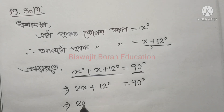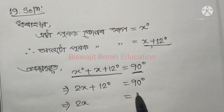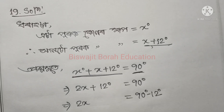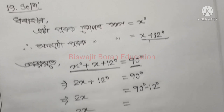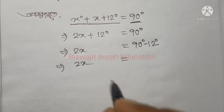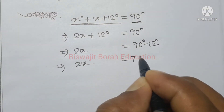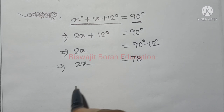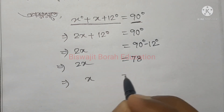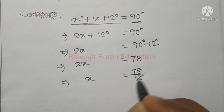So twice x equal to 90 minus 12. So twice x equal to 78. So x equal to 78 by 2.